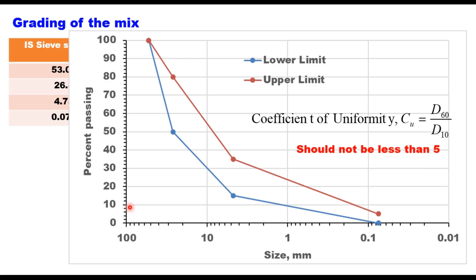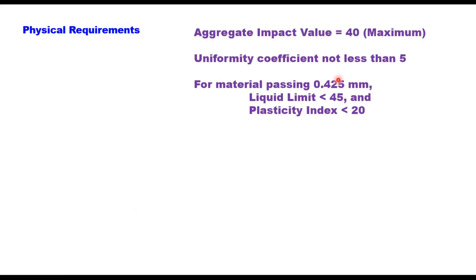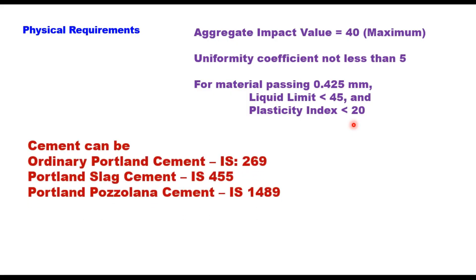The coefficient of uniformity should not be less than 5. Other physical requirements: aggregate impact value should be less than 40 percent, and material passing the 425-micron sieve should have a liquid limit less than 45 and plasticity index less than 20. Cement can be either Ordinary Portland Cement as per IS 269, slag cement, or Portland Pozzolana Cement (PPC) as per IS 1489.